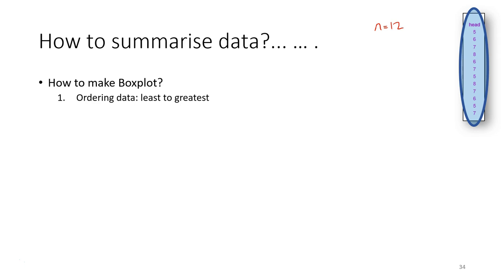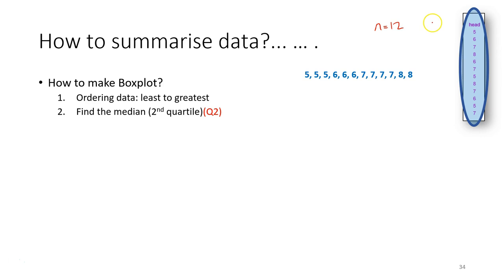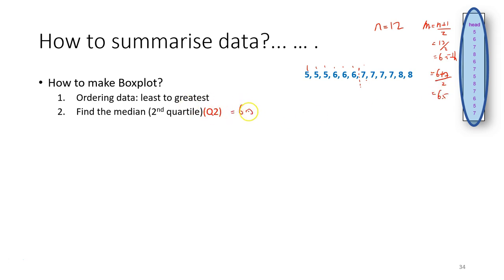Order the data from the smallest value to the largest value. After that, find the median. There's a formula you can use: the median position is equal to n plus 1 divided by 2. So it's 13 divided by 2, which is position 6.5. Count 1, 2, 3, 4, 5, 6, 7 — so 6.5 is between positions 6 and 7. We calculate the median as 6 plus 7 divided by 2, which equals 6.5. So our median is the value 6.5.